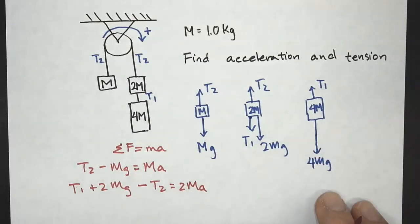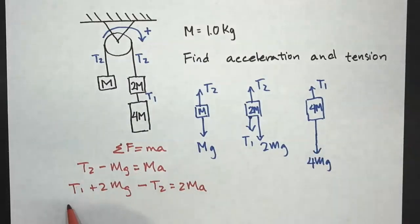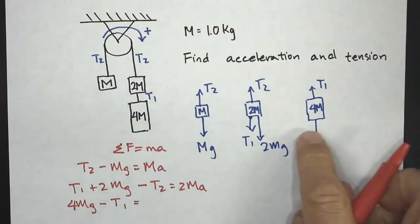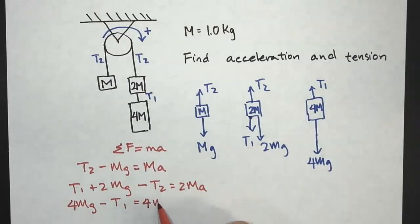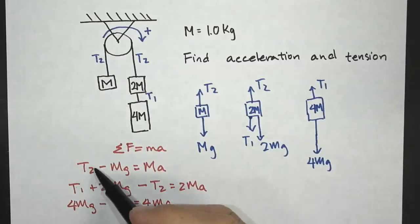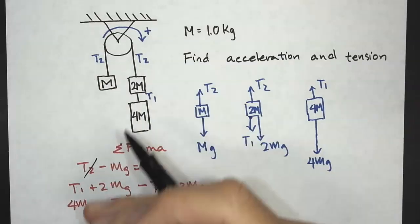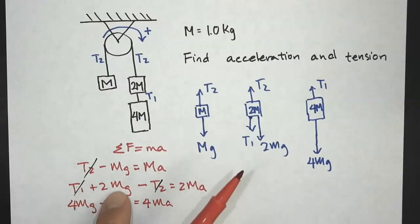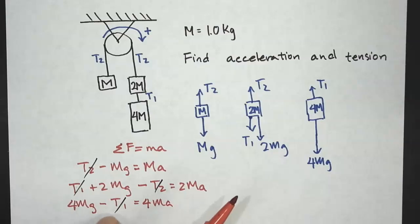For the third equation: 4Mg minus T1 equals 4Ma. Now if we add all three equations together, the T2 terms cancel out and the T1 terms cancel out. On the left-hand side we get 7Mg.